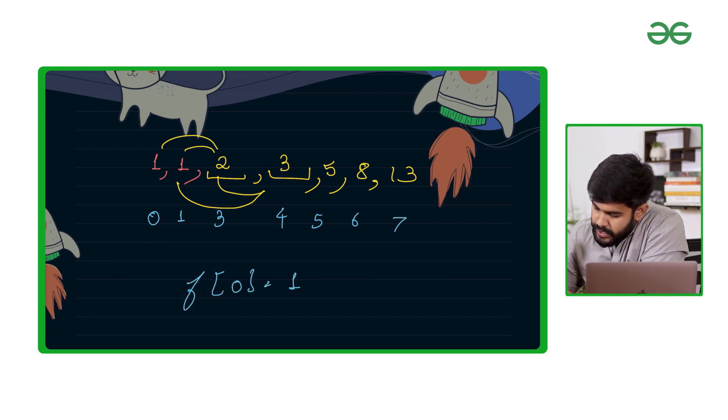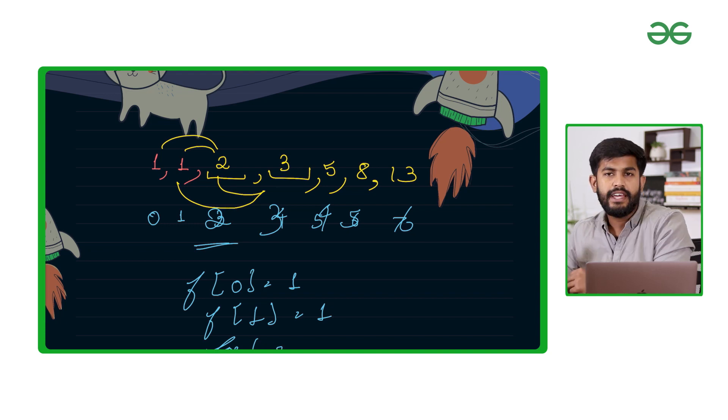We can just define f of 0 equals 1, f of 1 equals 1, and then we can start the loop from i equals 2. Then we can simply say f of i equals f of i minus 1 plus f of i minus 2, and that would be my solution itself.